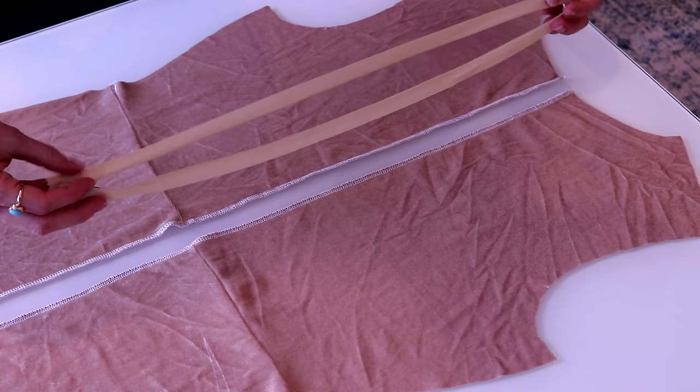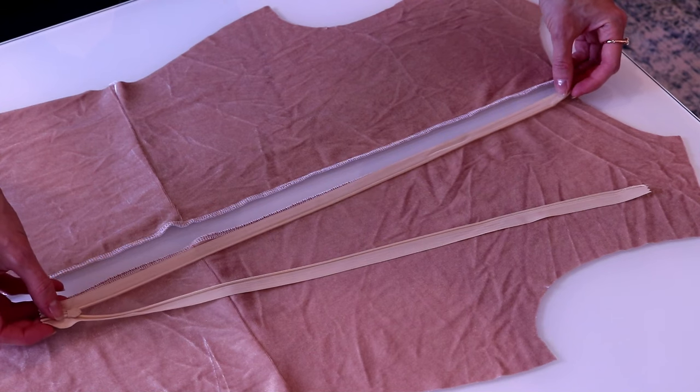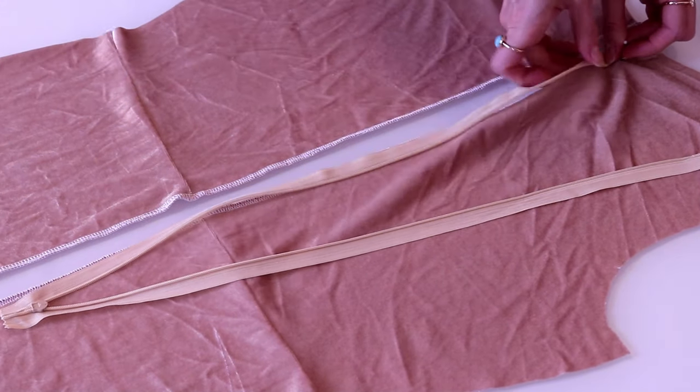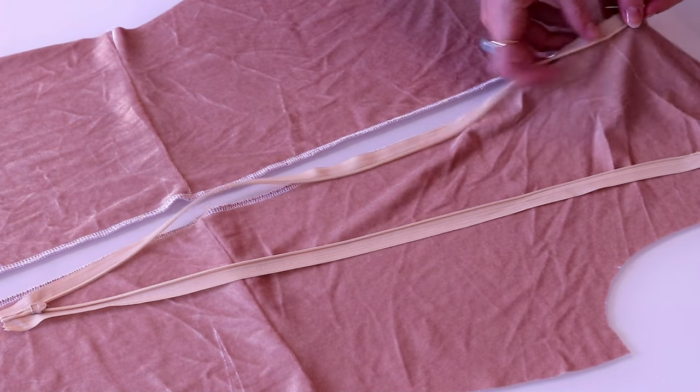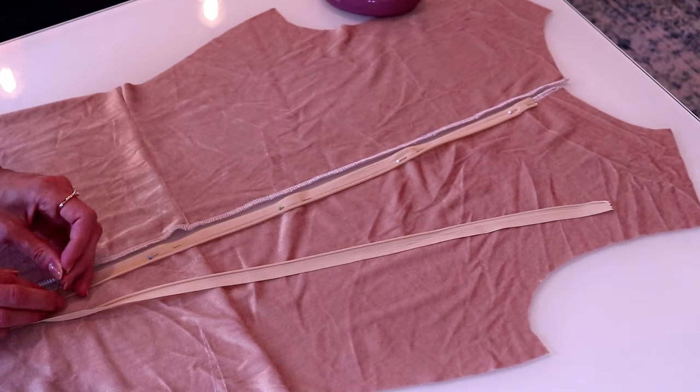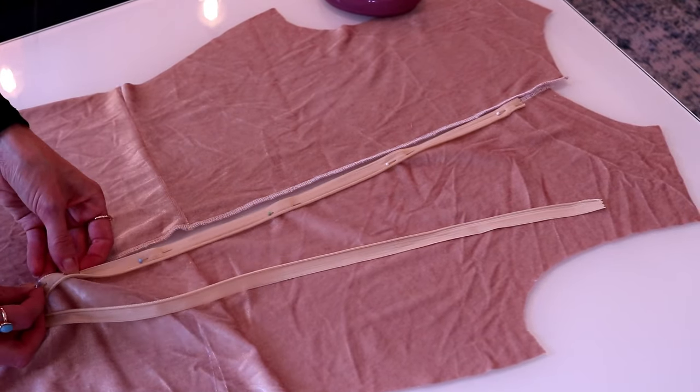Pin the open zipper against the fabric so that the right side of the fabric and the right side of the zipper are facing each other and the zipper teeth are along the seam line. Set the zipper so that the zipper pull is about 2 and 3 eighths of an inch or 6 centimeters from the upper edge. Pin and baste in place.